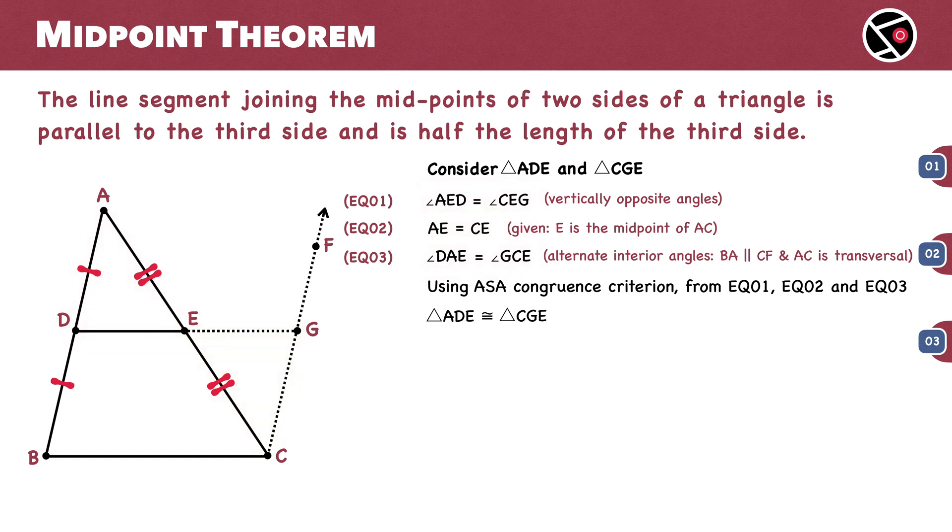Since corresponding sides of congruent triangles are equal, DE equals GE. This is equation number four.